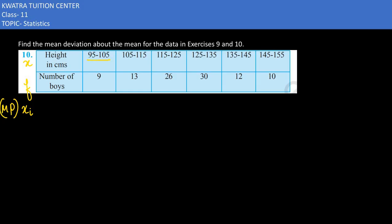Now what will the midpoint be? 95 and 105, obviously it would be 100. 105 to 115 is 110. Then 115 to 125 is 120. 125 and 135 is 130. Next would be 140, and next would be 150.